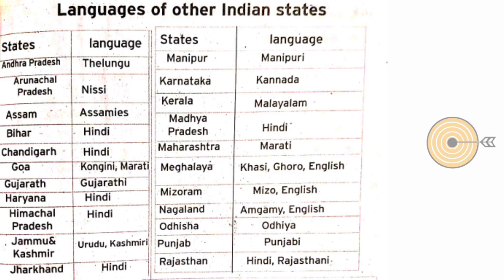Continuing the table: Jharkhand — languages; Sikkim — Nepali and Bhutia; Tamil Nadu — Tamil; Tripura — Bengali; Uttarakhand — Hindi; Uttar Pradesh — Hindi and Urdu; West Bengal — Bengali; Manipur — Manipuri; Karnataka — Kannada; Kerala — Malayalam; Madhya Pradesh — Hindi; Maharashtra — Marathi; Meghalaya — Khasi, Garo, and English, three languages. Nagaland — Angami and English; Odisha — Odia; Punjab — Punjabi; Rajasthan — Hindi and Rajasthani.